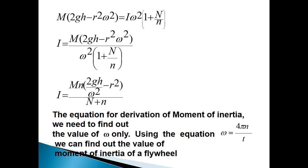So, we obtained the derivation or the value of the moment of inertia of flywheel. This equation contains the terms: mass, the number of windings before and after the mass detaching, omega, and also the radius of the axle as well as the height of the mass from the ground.